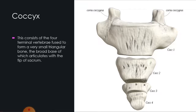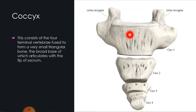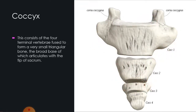The coccyx consists of four vertebrae fused to form a very small triangular bone — also called the tailbone. Its broad base articulates with the tip of the sacrum.